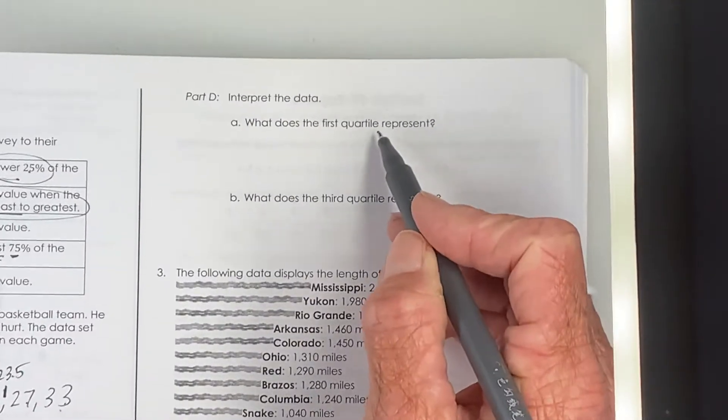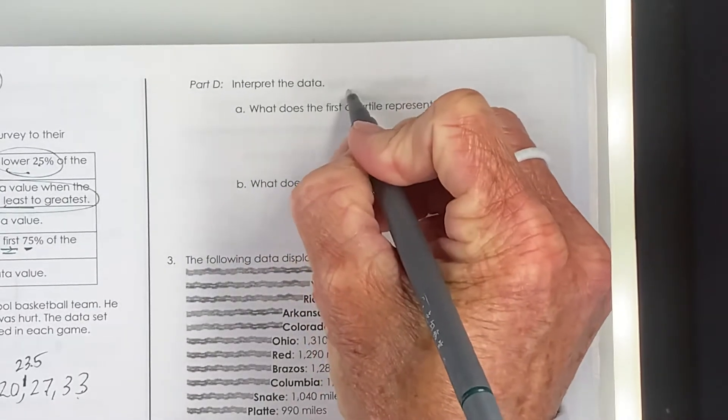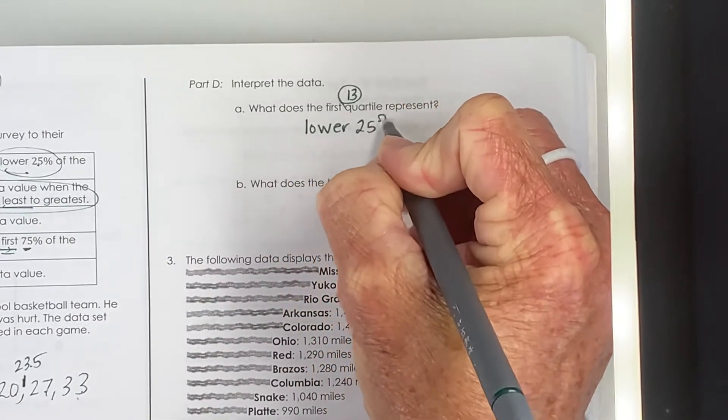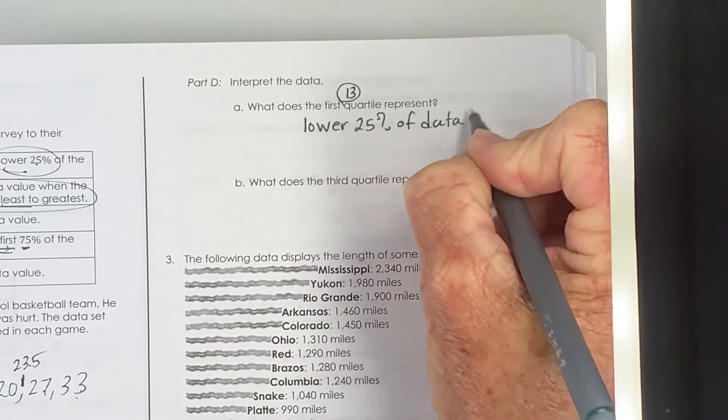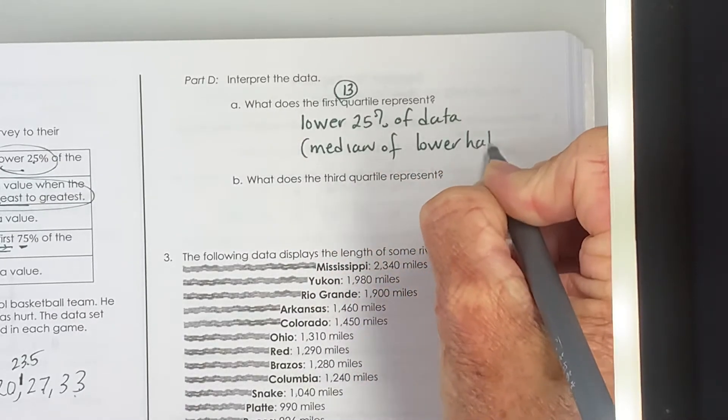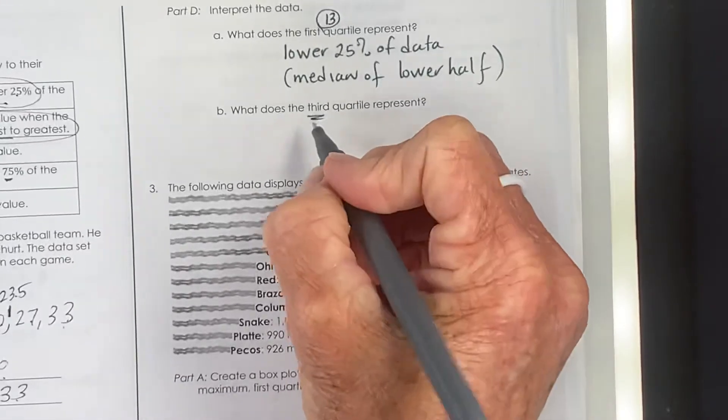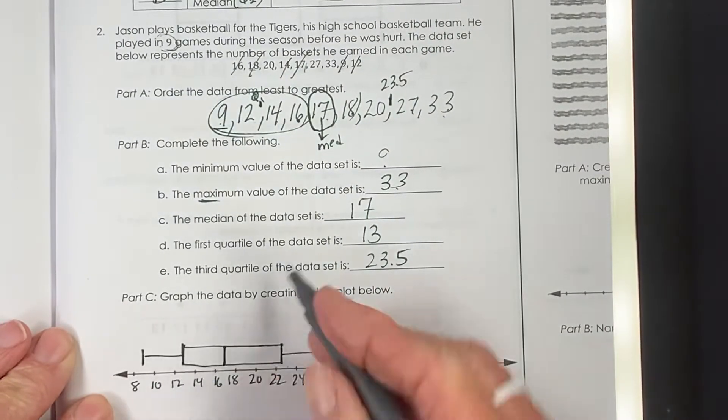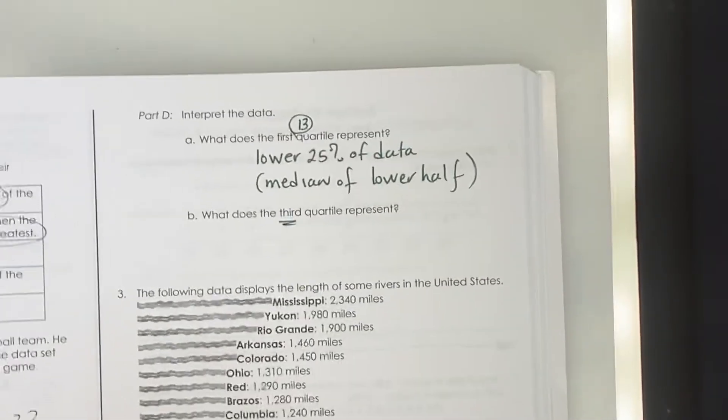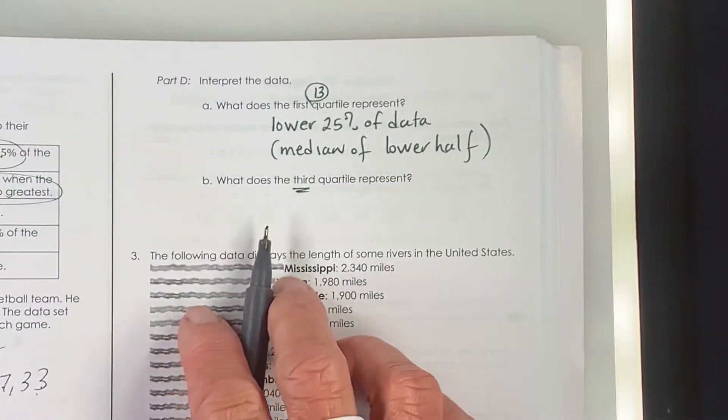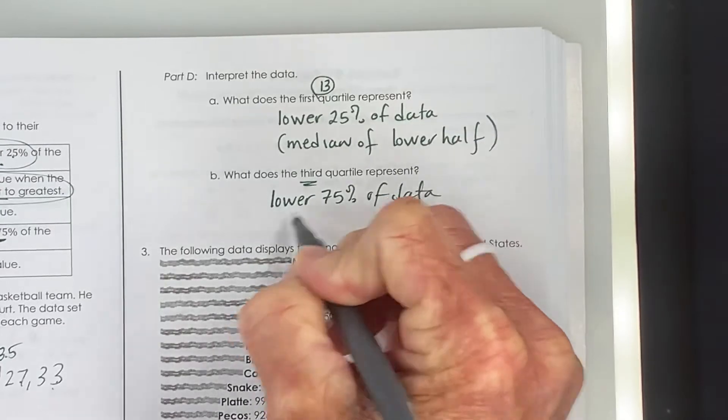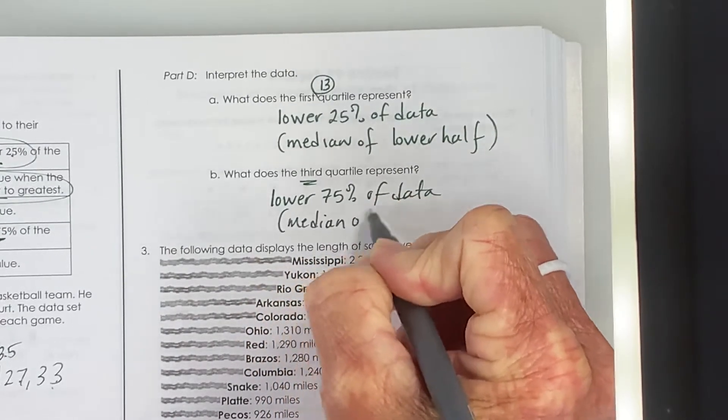Interpret the data. What does the first quartile represent? Our first quartile, by the way, was 13. Well, that represents the lower 25th percent of the data. And it was also the median of the lower half of the data. The third quartile, so starting from the bottom, we have 25, 50, 75. It represents the lower 75 percent of the data. It's also the cutoff for upper 25 percent, but it's our lower 75 percent of the data. And we found it, it was the median of the upper half.